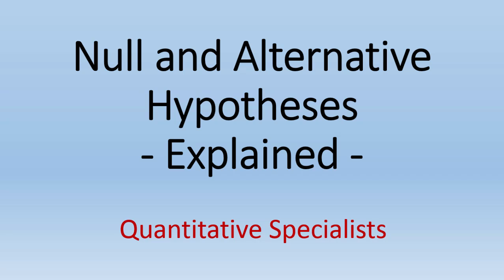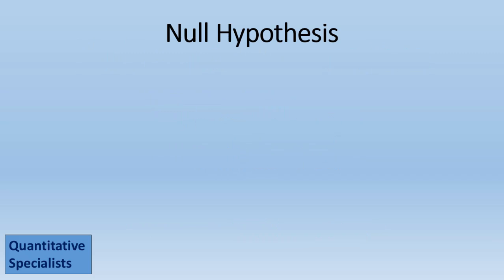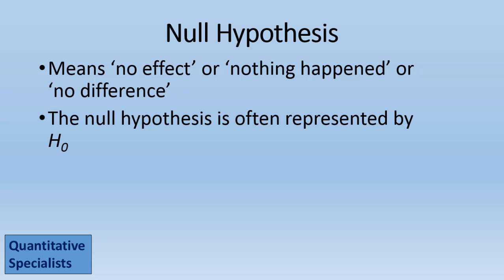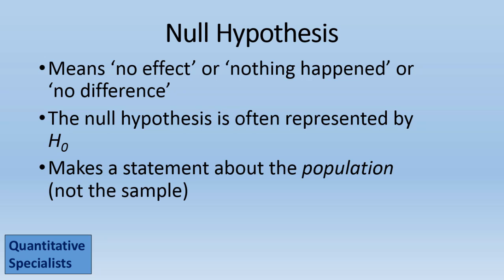In this video we'll take a look at null and alternative hypotheses. The null hypothesis means there's no effect, nothing happened, or there's no difference. The null hypothesis is often represented by H sub zero and it makes a statement about the population, not the sample. In other words, we put population values or symbols in our null hypothesis.